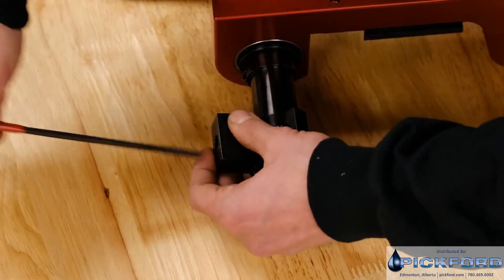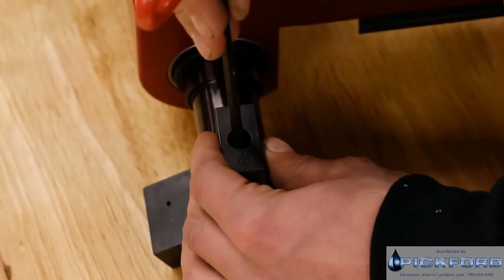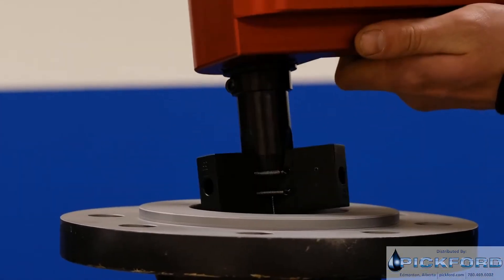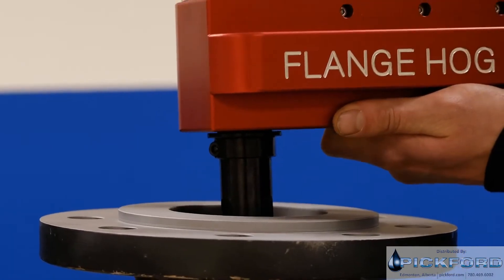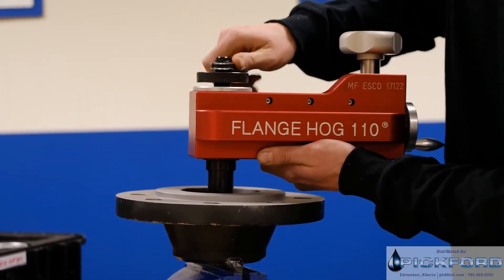The FlangeHog 110 has a clamping range from .9 inches to 10.3 inches and can machine flanges with range up to 14 inches. Our proprietary clamping system is easy to configure and designed for fast setup with a .005-inch alignment accuracy.